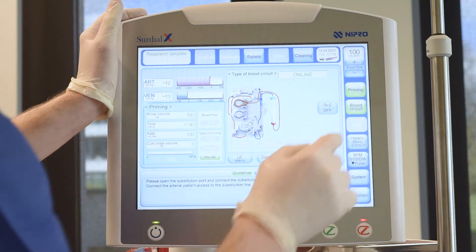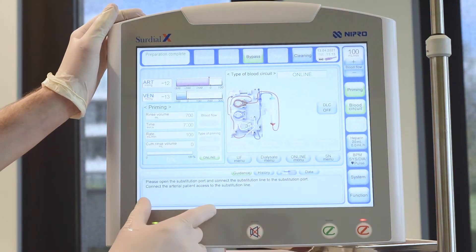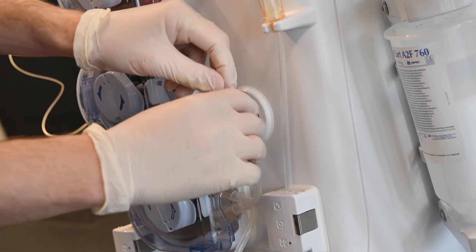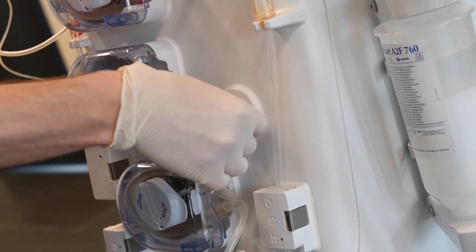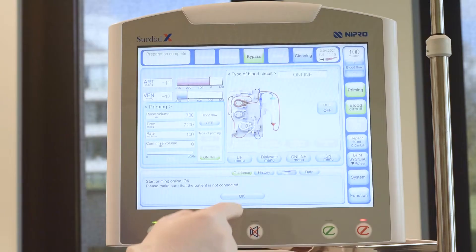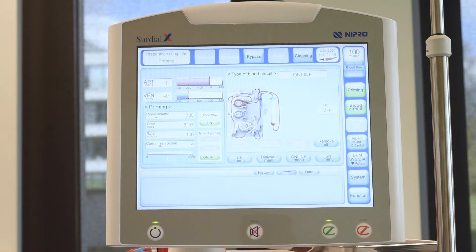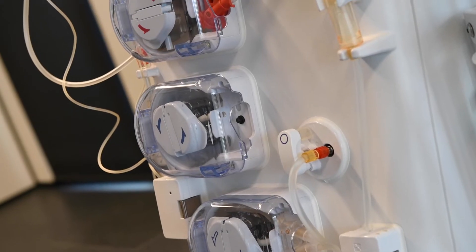Press priming to get to the priming window. Then open the substitution port as prompted and connect the short end of the substitution line. Press OK to start priming. As a HDF line was used, the machine automatically chooses online priming.